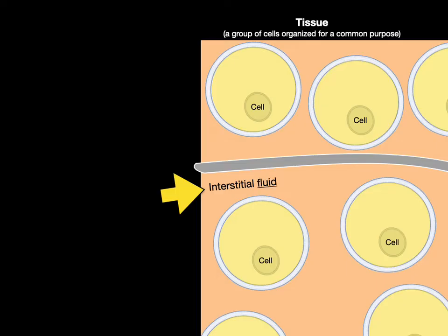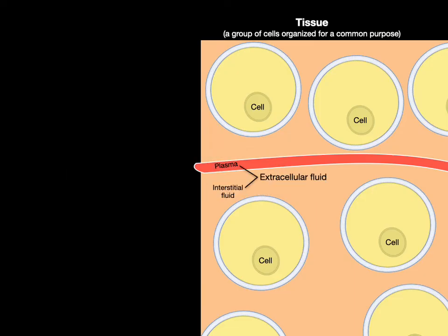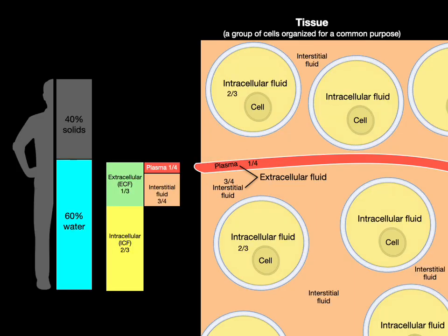And so that water, interstitial fluid, is really just bound to these proteoglycans that make this gel type. Now, what do we call the fluid in a vessel? We call it plasma. We take plasma and interstitial fluid, they form wonder twin powers. That's our extracellular fluid. So there we have it all in a nutshell.